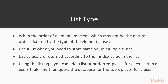In Cassandra there is also a list type available to us. When the order of elements matters, which might not be the natural order dictated by the type of the elements, we can use a list. We can also use a list when we need to store the same value multiple times, because a set doesn't allow that.